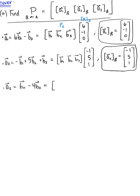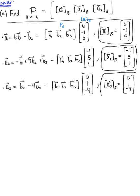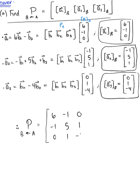Converting vector a₃ to the matrix equation: the matrix with column vectors b₁, b₂, b₃ multiplied by the vector of weights 0, 1, negative 4. Therefore the coordinates of vector a₃ relative to basis b is the column vector 0, 1, negative 4. Taking these three column vectors, the change of coordinates matrix P from basis a to basis b is the 3×3 matrix with columns [6, −1, 0], [−1, 5, 1], and [0, 1, −4].